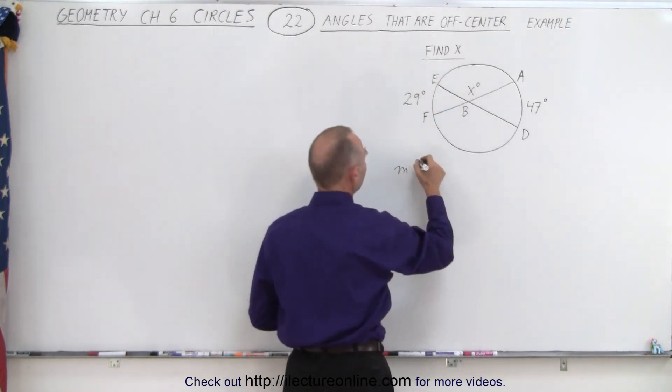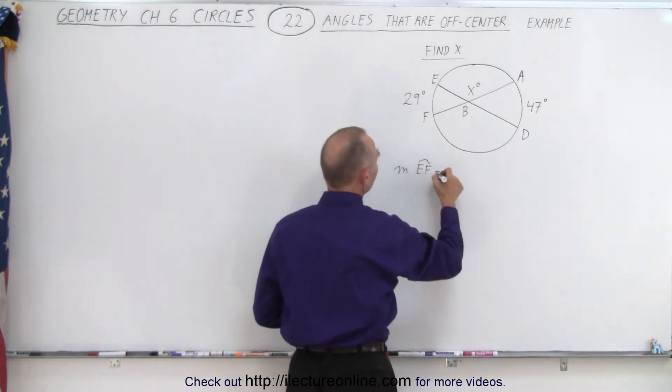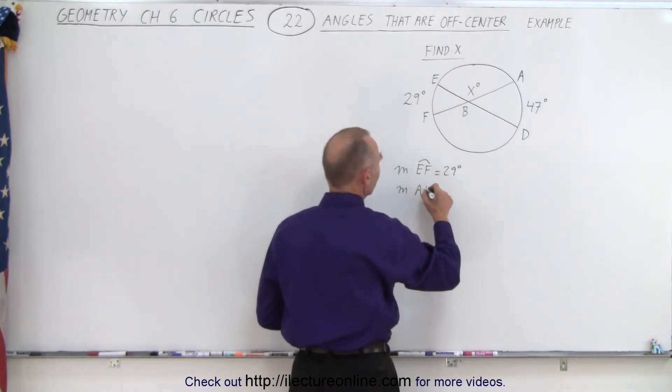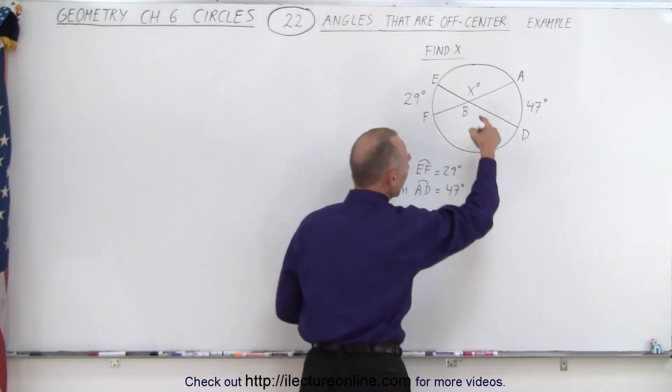We know that the measure of the arc from e to f is equal to 29 degrees, and we know that the measure of the arc from a to d is equal to 47 degrees.